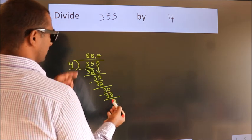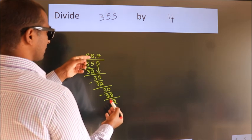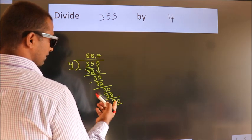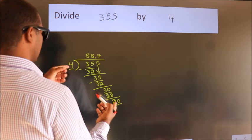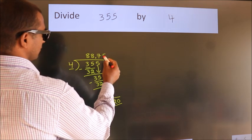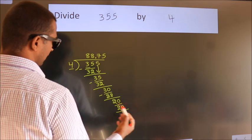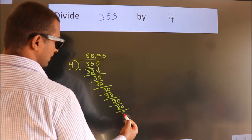After this, we already have the decimal. So directly take 0. So 20. When do we get 20 in the 4 table? 4 times 5 equals 20. Now we subtract. We get 0.